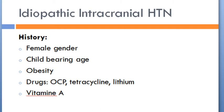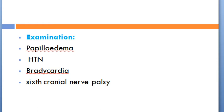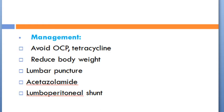Idiopathic intracranial hypertension: there may be a history of female gender, childbearing age, obesity, and drugs such as OCP, tetracycline, lithium, and vitamin A. Symptoms include headache not responding to analgesics, visual changes, nausea, and vomiting. On examination there may be papilledema, hypertension, bradycardia, and sixth nerve palsy. Management includes cessation of OCP and tetracycline; ICP reduction is important. Lumbar puncture to evacuate CSF fluid is also important. Acetazolamide along with potassium replacement is given; if these measures fail, lumboperitoneal shunt is advised.